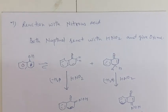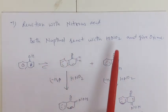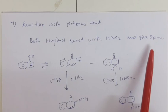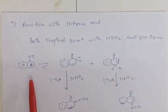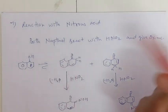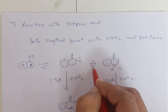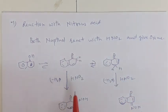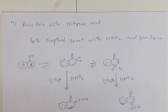The reaction of alpha or beta naphthol with nitrous acid: they give an oxime. The naphthol undergoes isomerization, and these are isomers of alpha naphthol. They react with nitrous acid, eliminate a water molecule, and give the oxime — alpha naphthol-2-oxime.